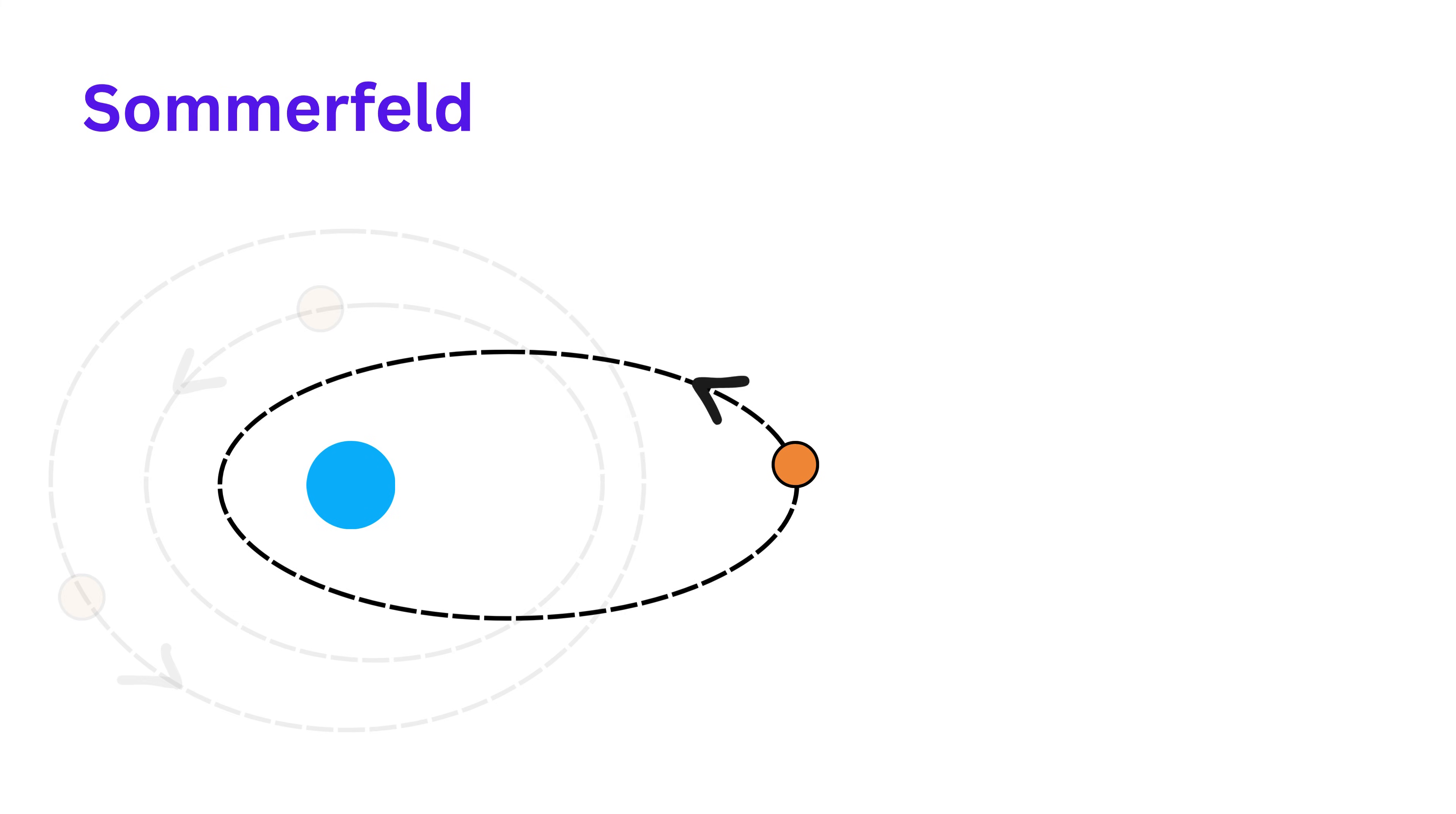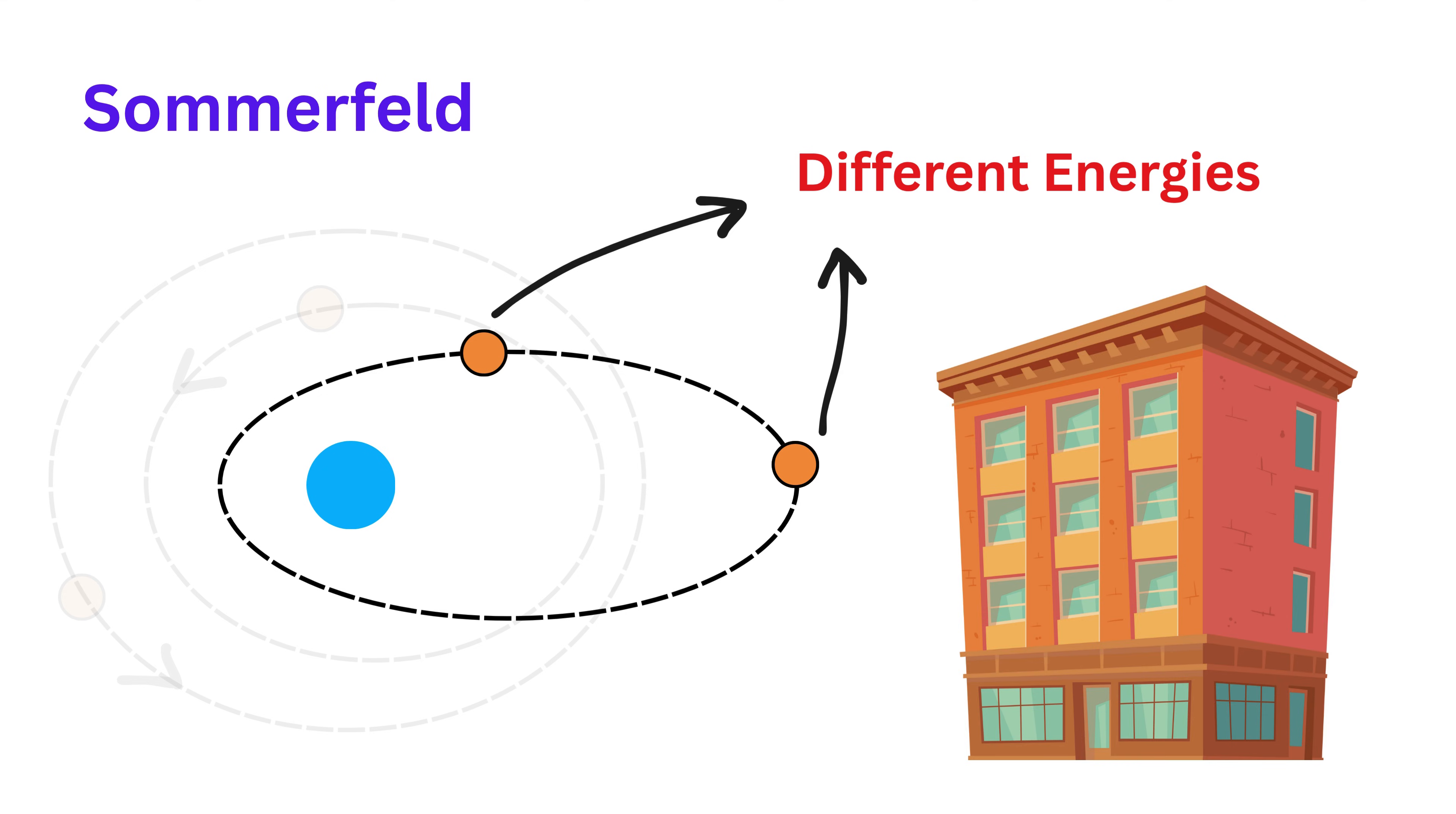Because elliptical orbits mean that electrons can be closer or farther from the nucleus at different times. This explains why electrons within the same energy level or within the same orbit might have slightly different energies.